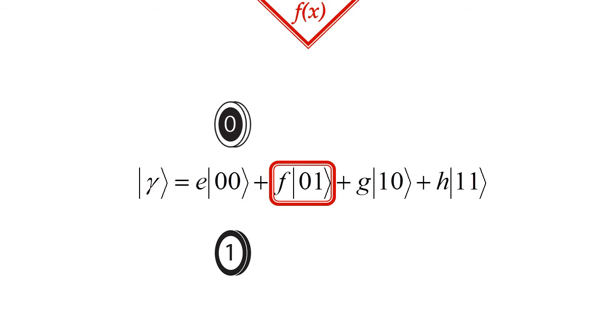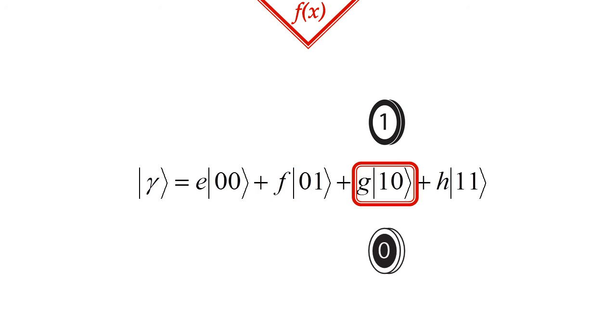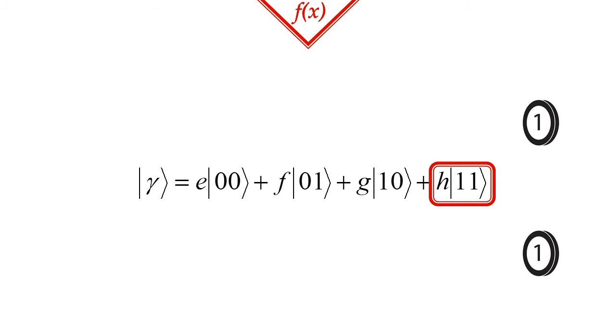Ket 01 means the first qubit is 0, and the second is 1. Ket 10 means the first is 1, and the second is 0, while ket 11 means both of them are 1s. So this was our first example.